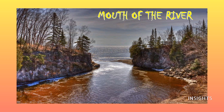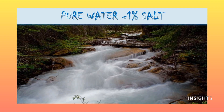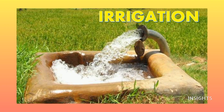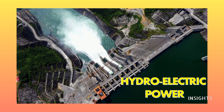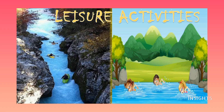The water that flows in a river is fresh, meaning that it contains less than 1% salt. Humans use rivers for irrigation in agriculture, for drinking water, for transportation, to produce electricity through hydroelectric dams, and for leisure activities like swimming and boating.